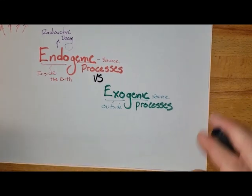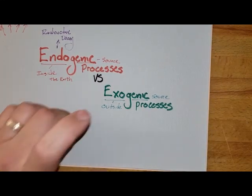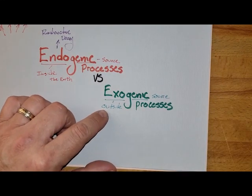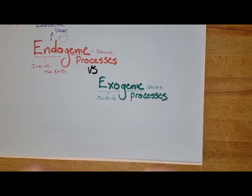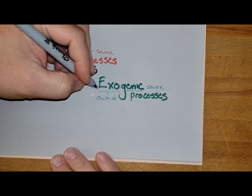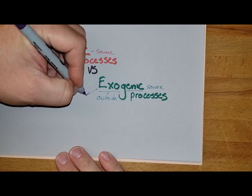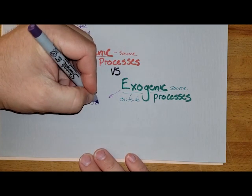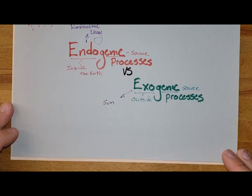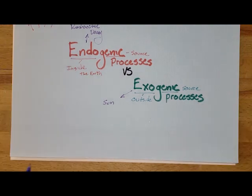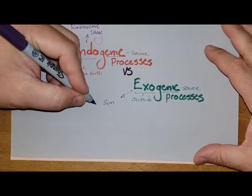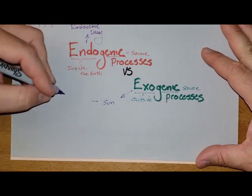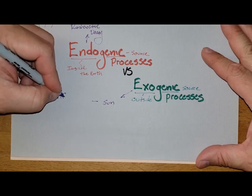We also have our exogenic energy. The main way we receive energy from the outside is from the sun. In terms of shaping the landscape, the sun does a few significant things — first off, it causes differences in temperature.